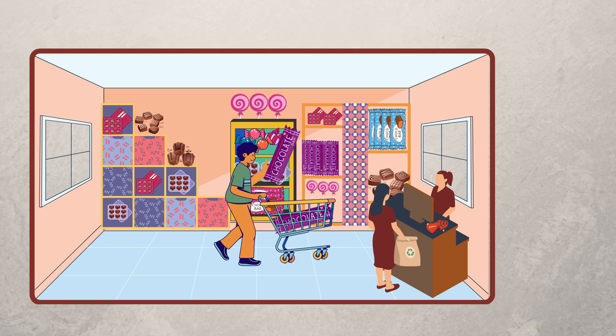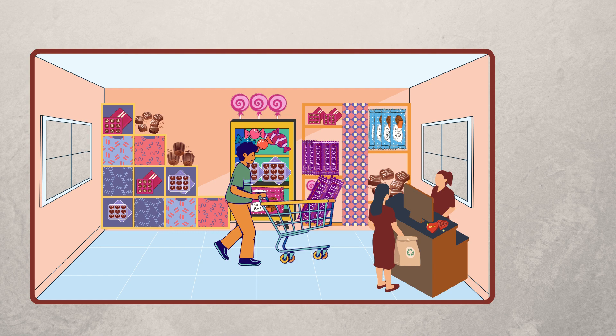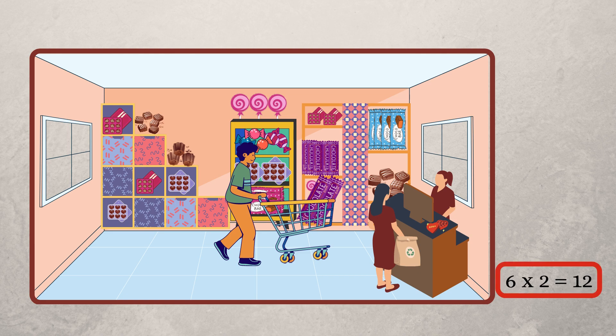You then take one more for your sister. So now there are 2 chocolates in total. So you would be paying 6 into 2 which is 12 rupees.